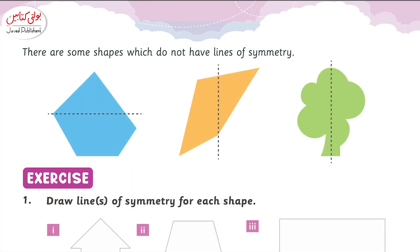There are some shapes which do not have line of symmetry. If you pass a line of symmetry within it, these are not equal parts or equal halves divided. That is why we will say these are not symmetrical.